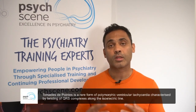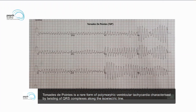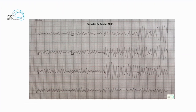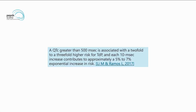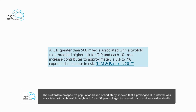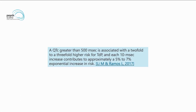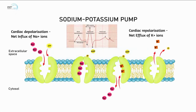The main risk of a prolonged QTc is torsade de pointes, which literally means twisting around points. This is a form of ventricular arrhythmia that can be fatal. A QTc interval greater than 500 milliseconds is associated with a two- to threefold higher risk of torsade de pointes, and each 10-millisecond increase contributes to approximately a 5% to 7% exponential increase in risk.